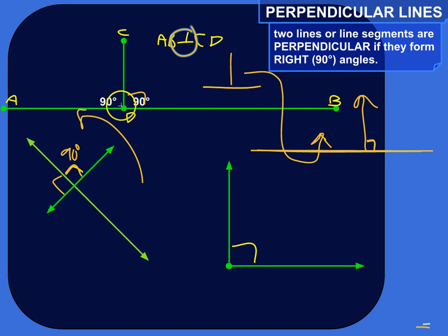And you can just tell if the lines form a 90 degree angle, which can be written out 90 degrees or a little box like that. Then the lines or line segments are perpendicular.